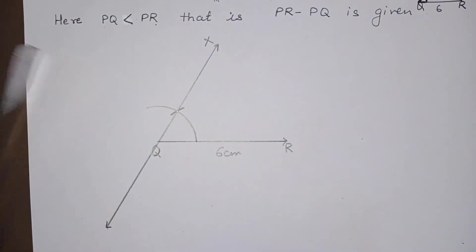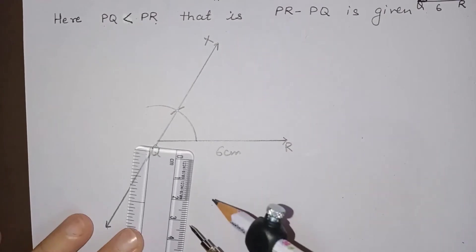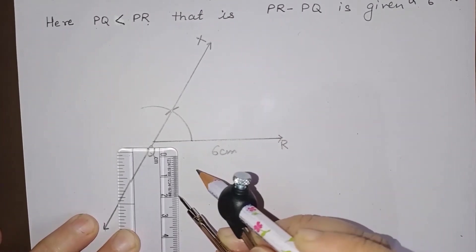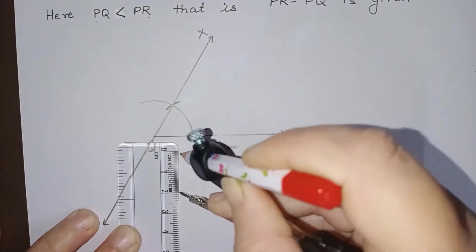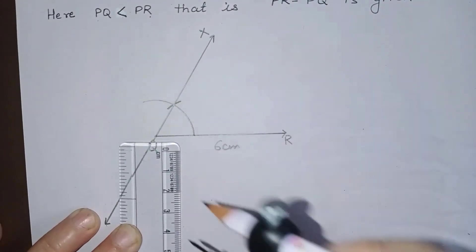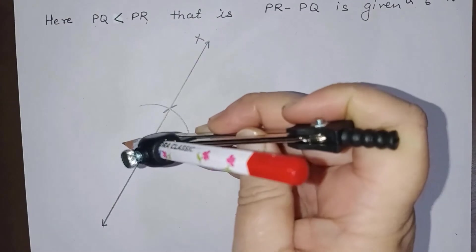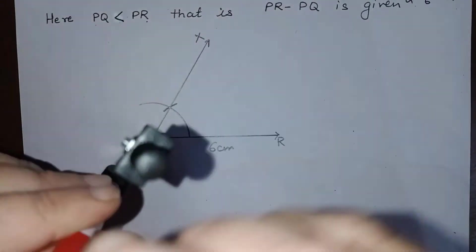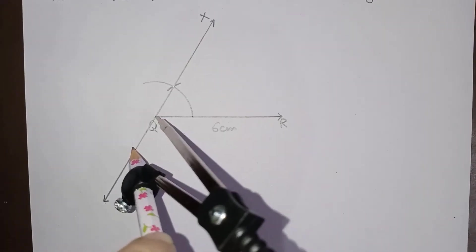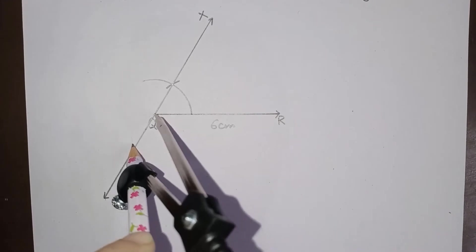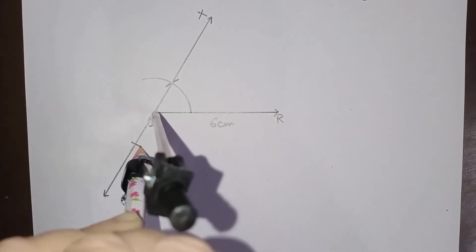Now at point Q we will keep our compass at Q and we will take 2 centimeter. So this is like this, 2 centimeter. We will keep it at Q and we will take 2 centimeter.